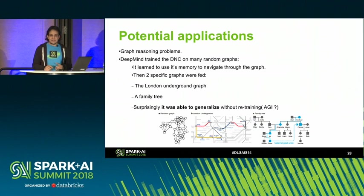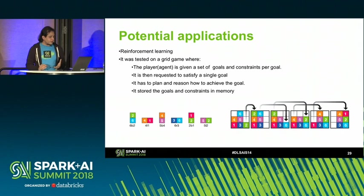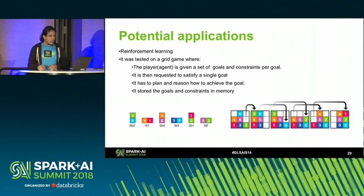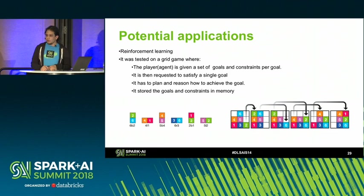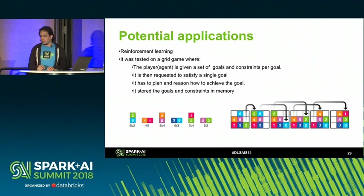As you can see, this is a really recent model but with a lot of potential towards general artificial intelligence. It can also be used for reinforcement learning — for example, it was used in a grid game where you give the system some constraints and specify that it needs to satisfy them. The system uses its memory to win the game while satisfying the constraints. This requires reasoning and planning, which is something we humans do very well but a common neural network can't do.